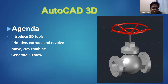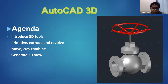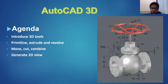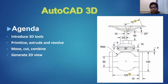We're going to focus on introducing the 3D tools: how to switch from the 2D to the AutoCAD 3D interface, then look at 3D creation tools such as primitive, extrude, and revolve. After that we'll do some editing — smooth cut and bind — and lastly from the 3D object we'll generate a 2D view that looks something like this.